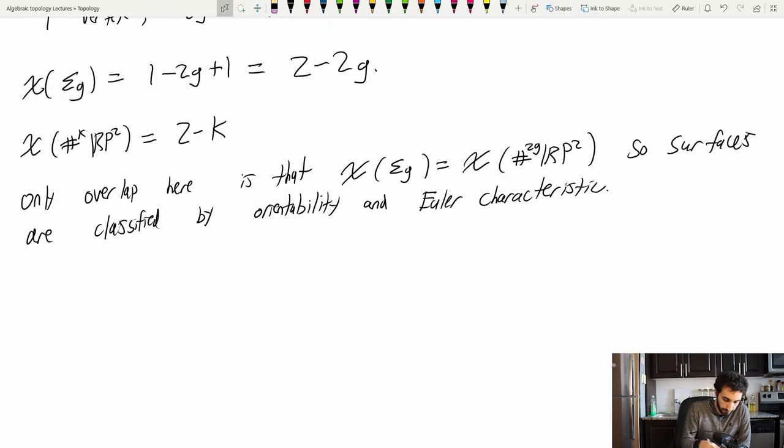So let's do one more. χ of Sn is equal to, well, how do I build Sn with a CW complex? It's always a single zero cell and a single n cell with the attaching map of the whole boundary of the n cell going to that point.